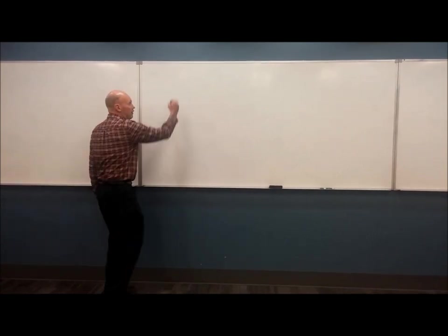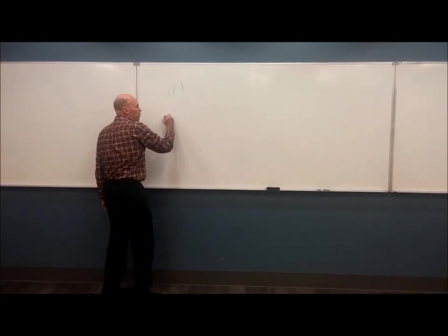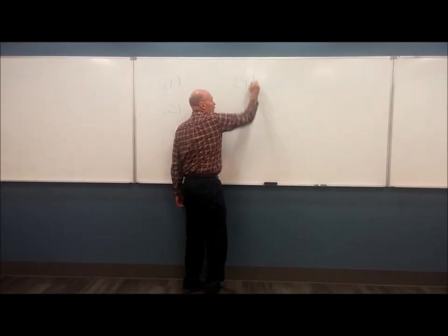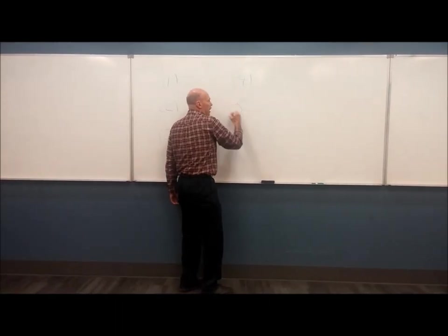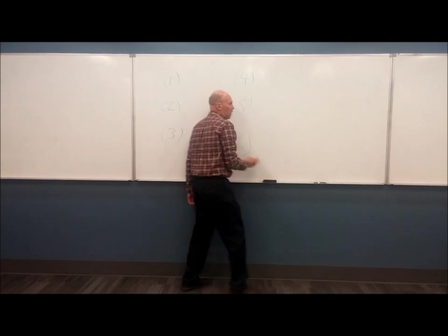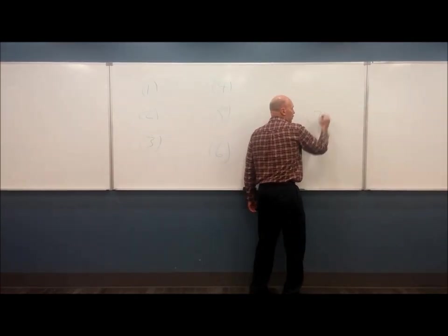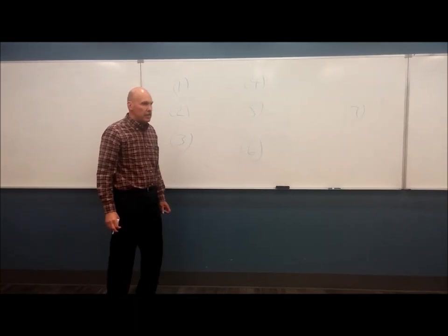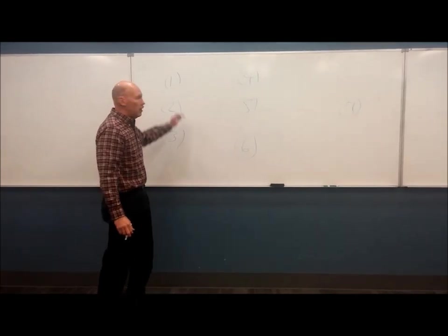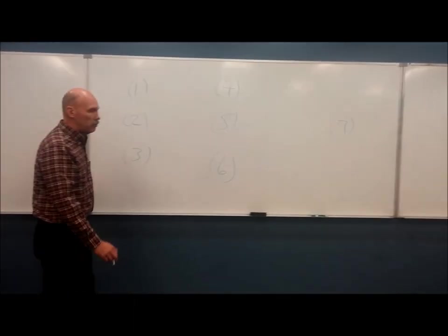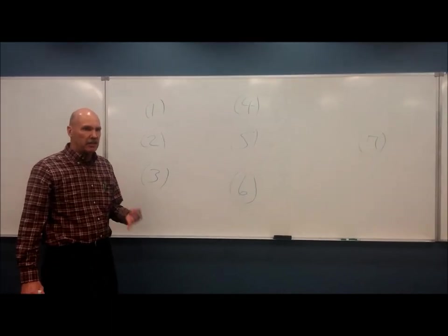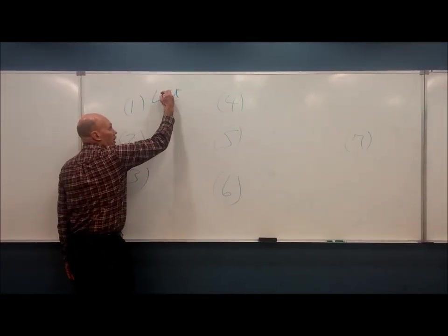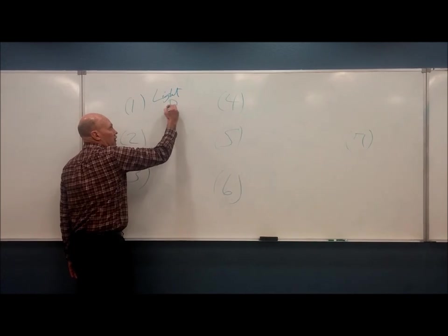So we have day 1, day 2, day 3, day 4, day 5, day 6, and then over here we have day 7. And it's helpful to think about what gets created on each day. On day 1, we have God saying, 'Let there be light, and there was light.'